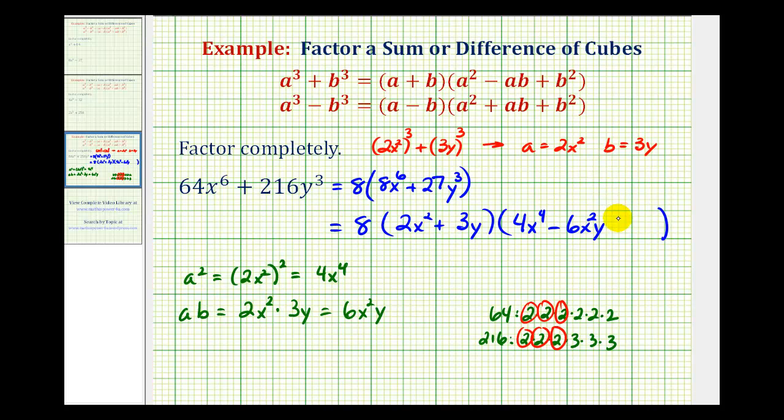And then we have plus b^2, so if b equals 3y, b^2 would be equal to (3y)^2, which would be 9y^2.